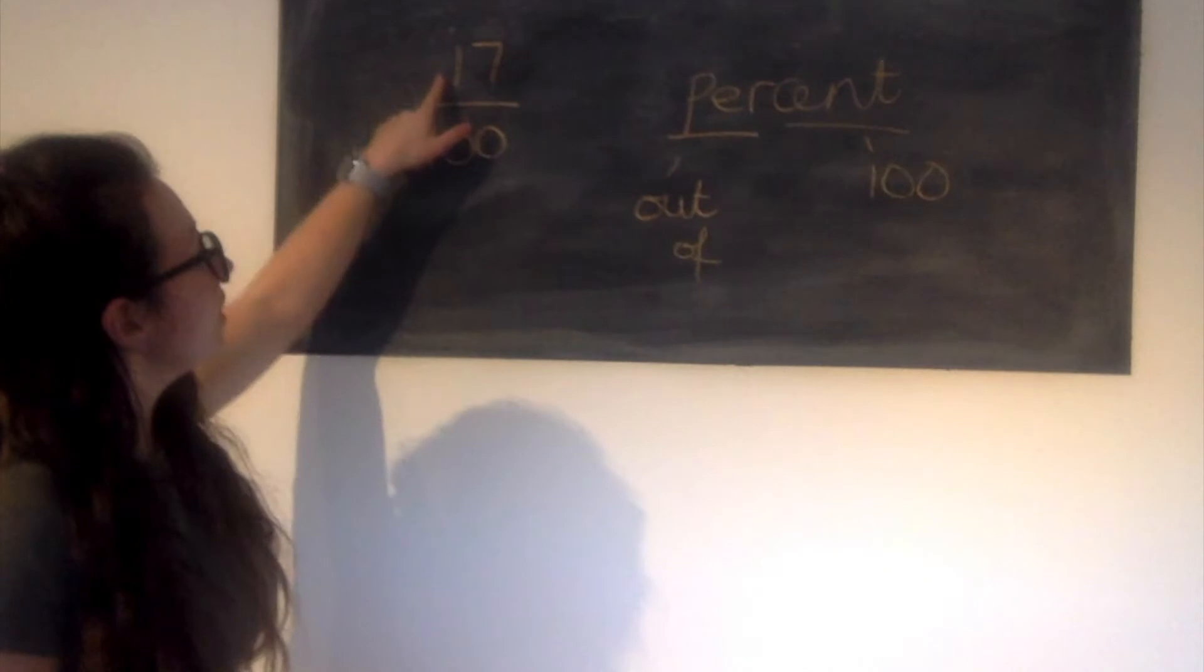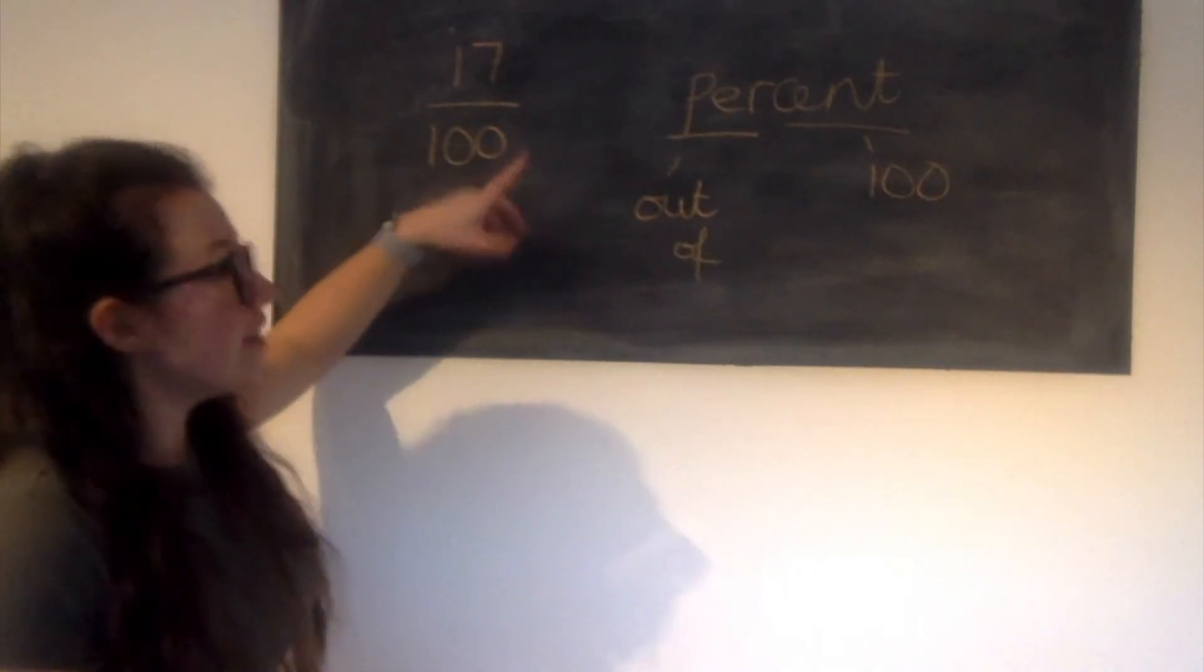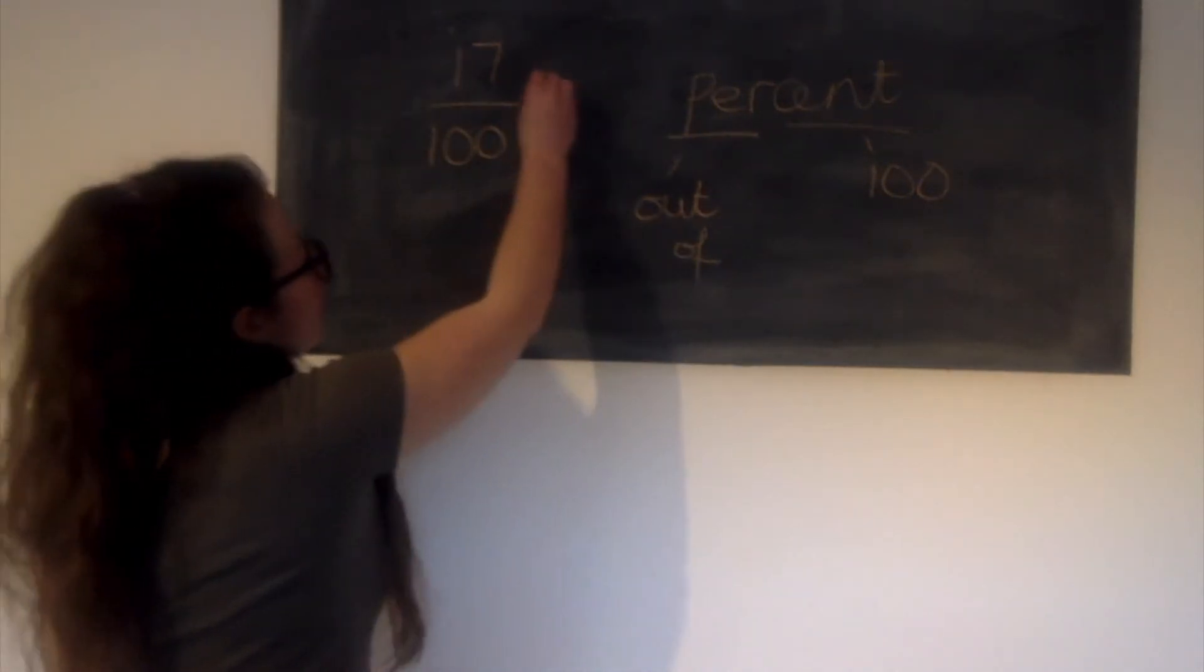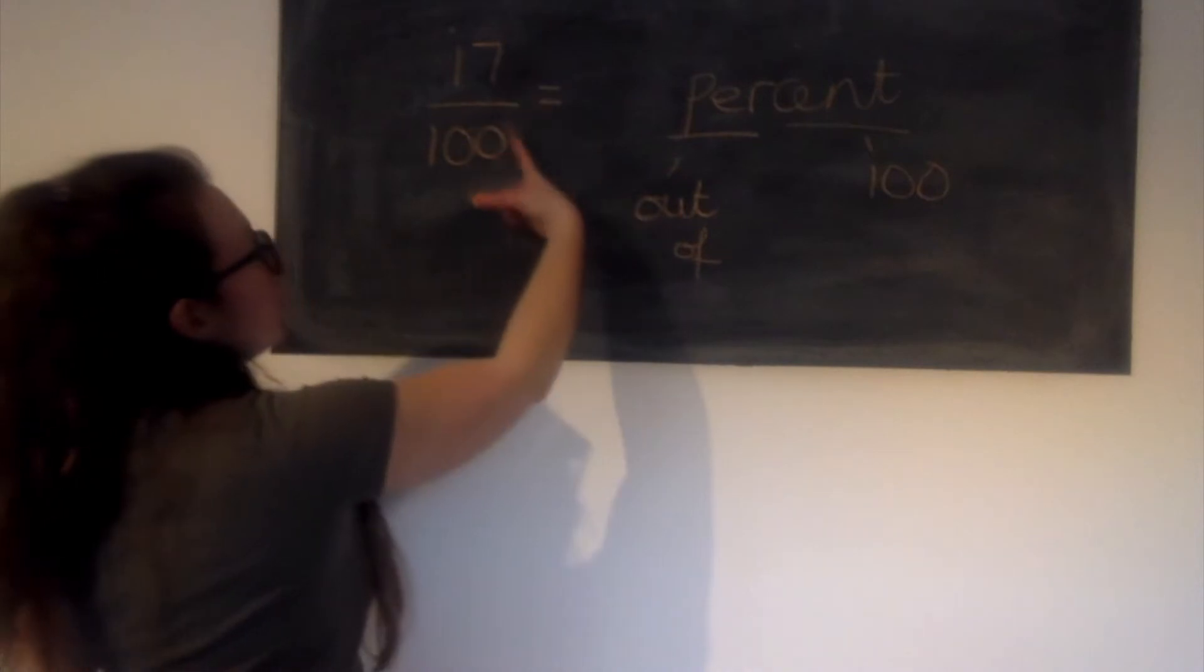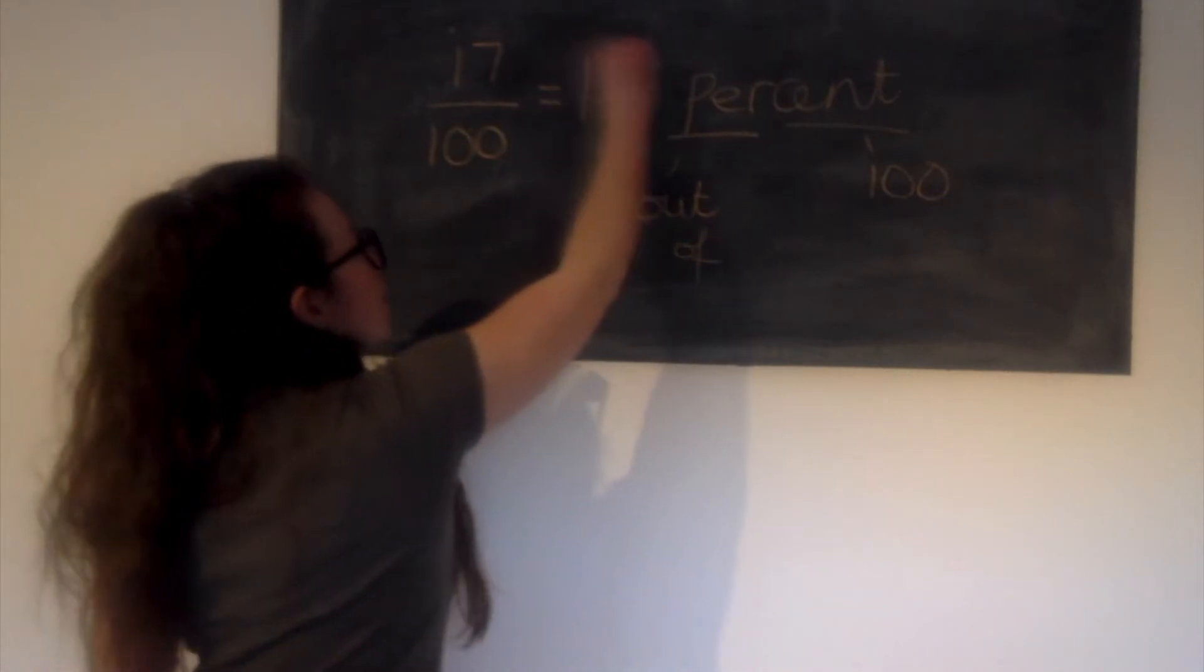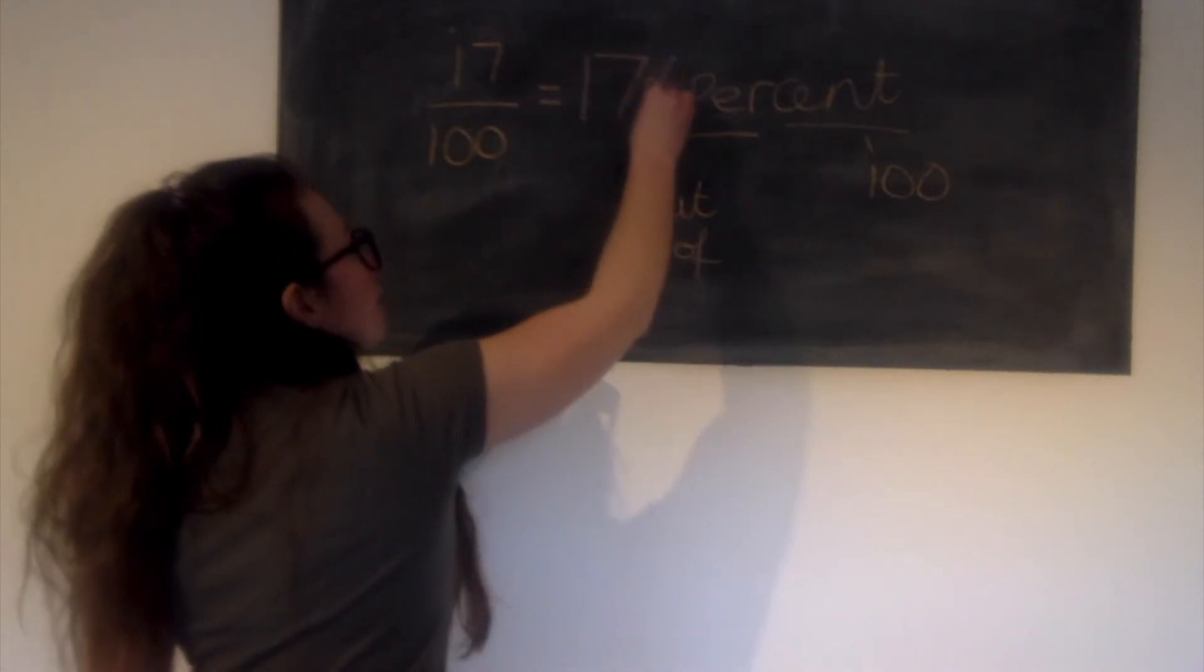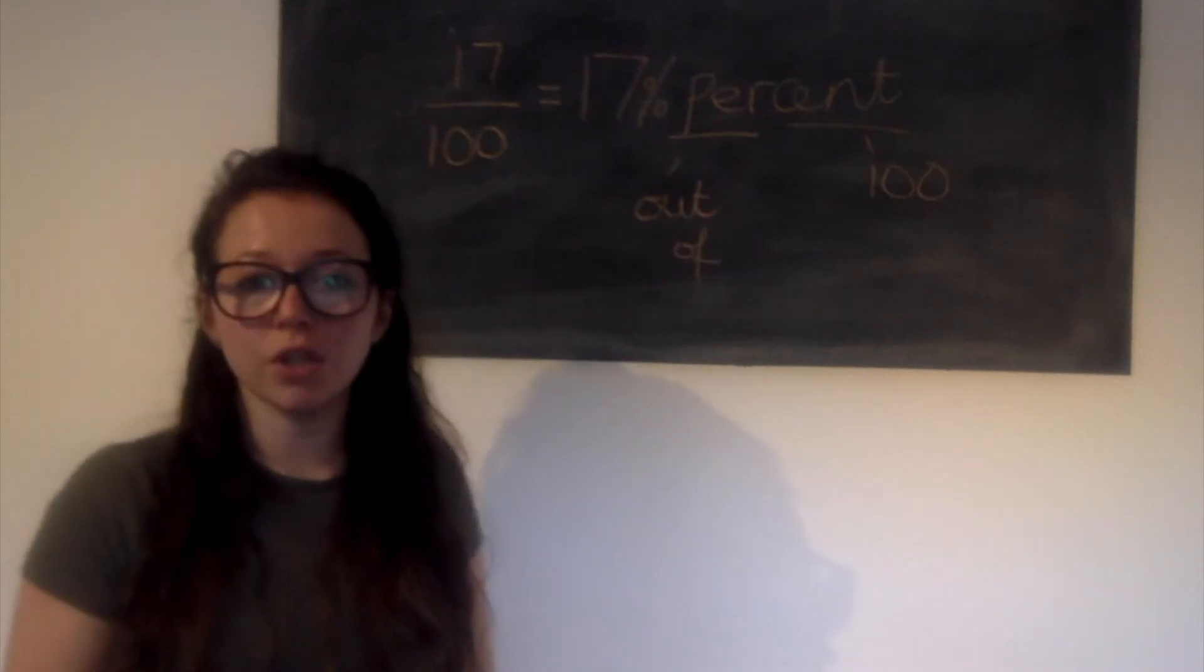So we must make sure our fractions today are out of 100. Well this one already is, it's 17 out of 100. So that means I can turn it straight away into a percentage. So 17 hundredths is the same as 17%. Let's have a look at another one.